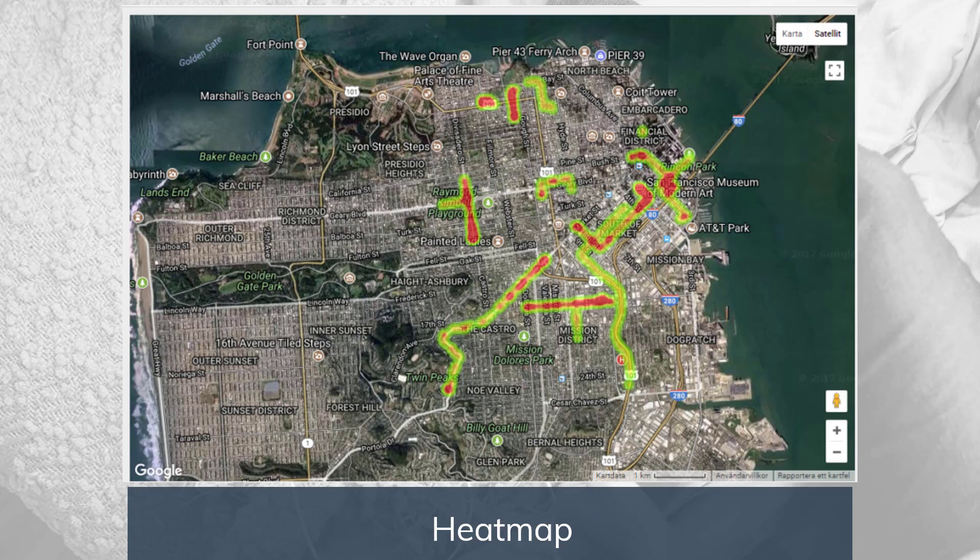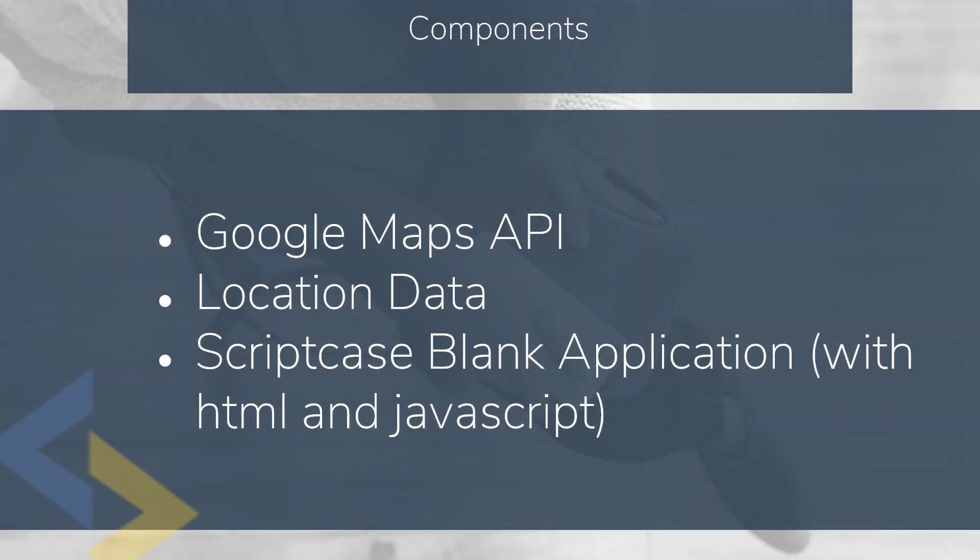We're going to look at how to do this with some different types of data. It's really just based on GPS data — longitudes and latitudes — but it's very easy to set up. We'll need the Google Maps API, which is a very convenient API to work with. We'll start with some demo data we hardcode in, then move to using data from a database table. We'll put this heat map inside a Scriptcase blank application using some HTML and JavaScript, and even if you're not a programmer, a lot of this code can just be copied and put in with just a few modifications.